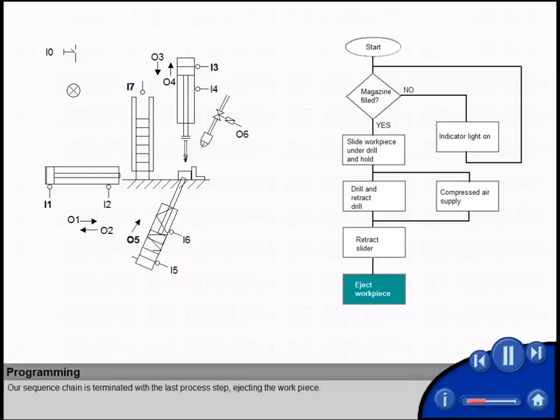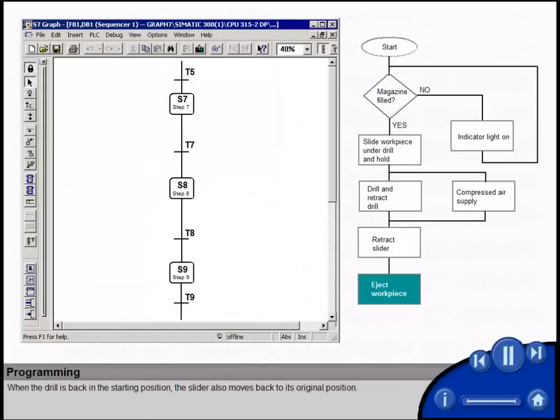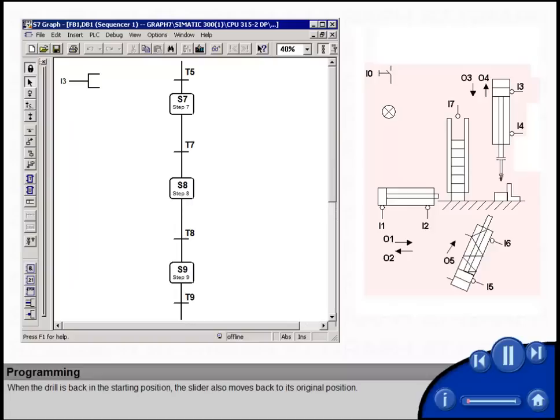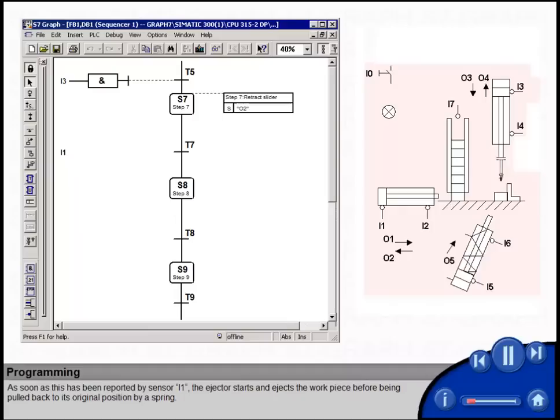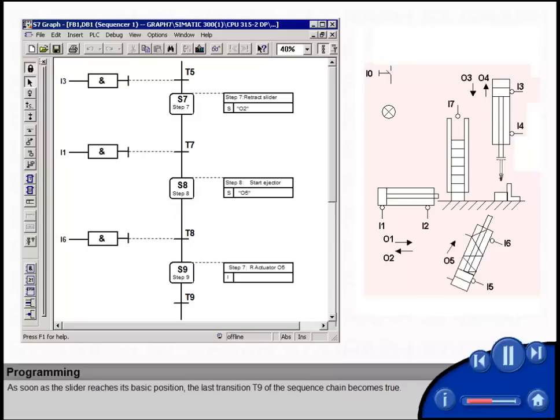Our sequence chain is terminated with the last process step, ejecting the workpiece. When the drill is back in the starting position, the slider also moves back to its original position. As soon as this has been reported by sensor I1, the ejector starts and ejects the workpiece before being pulled back to its original position by a spring. As soon as the slider reaches its basic position, the last transition T9 of the sequence chain becomes true.